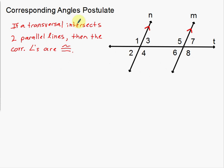If a transversal intersects two parallel lines, then the corresponding angles are congruent. You can actually see that here without doing a lot of math. Angle 1 is kind of an obtuse angle, and if you look at the corresponding angle, angle 5 is also obtuse. So the corresponding angles are, in fact, congruent.